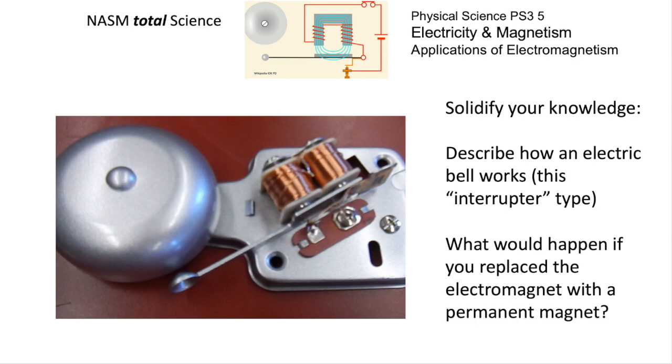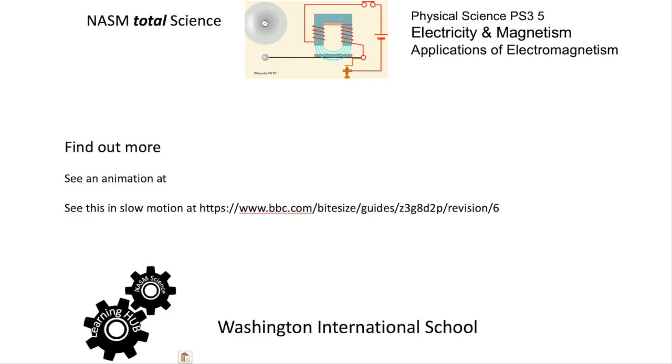To solidify your knowledge, be able to describe in words or with a diagram how this type of interrupter electric bell works, and maybe what would happen if you replace the electromagnet with a permanent magnet. Pause this to find out more—see an animation in slow motion of the electric bell at BBC Bitesize.